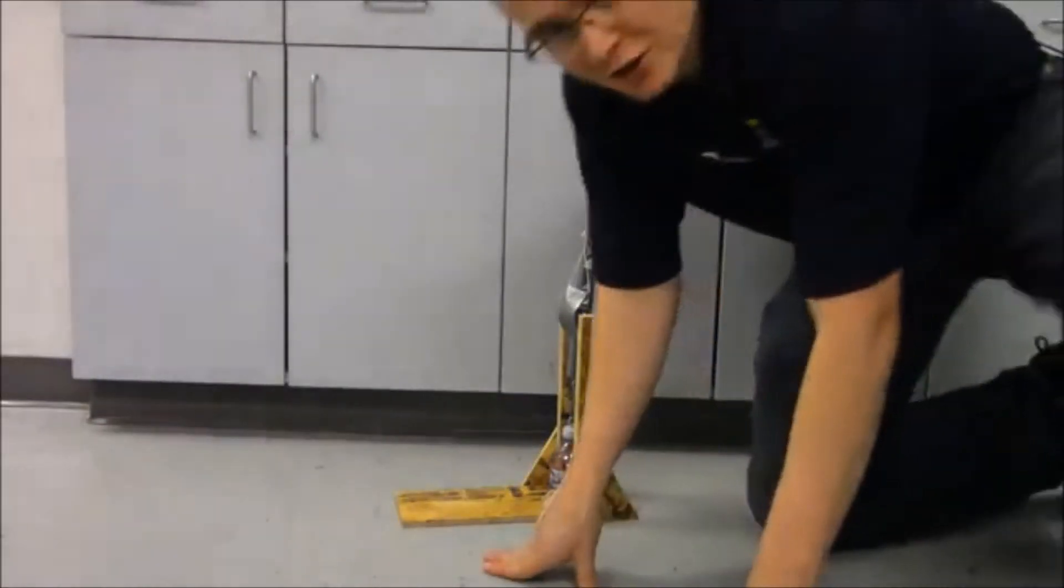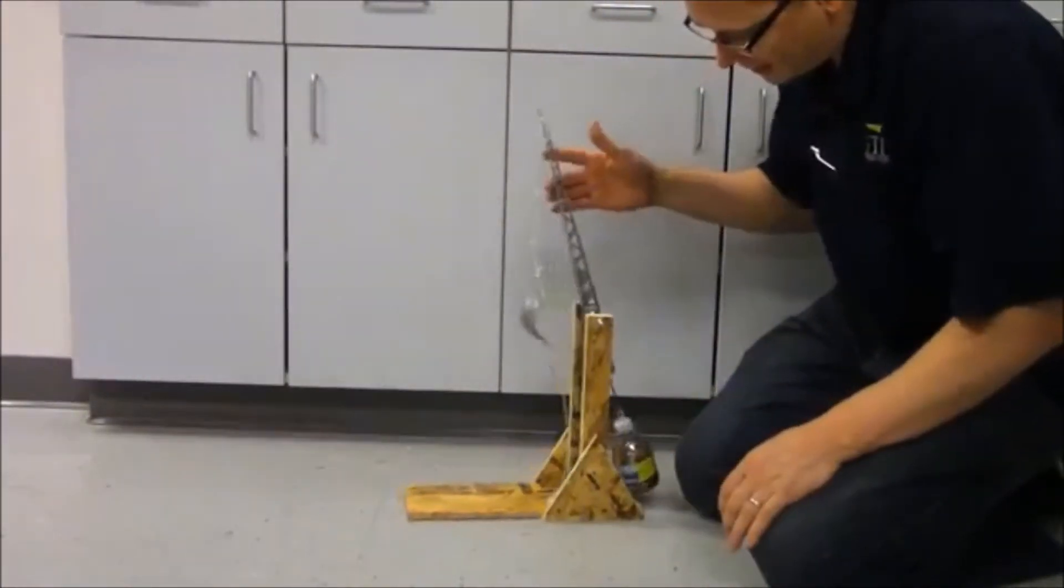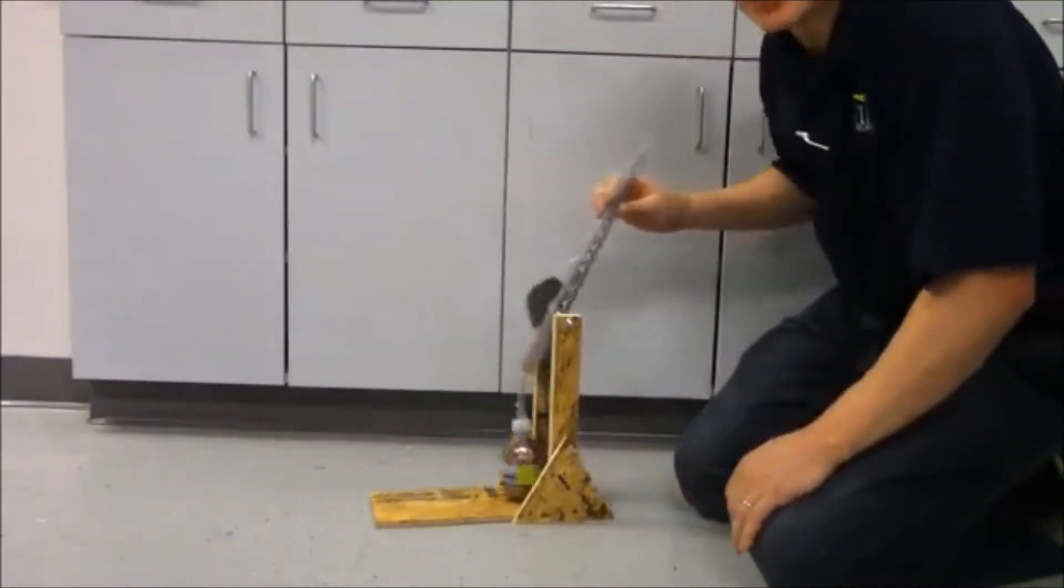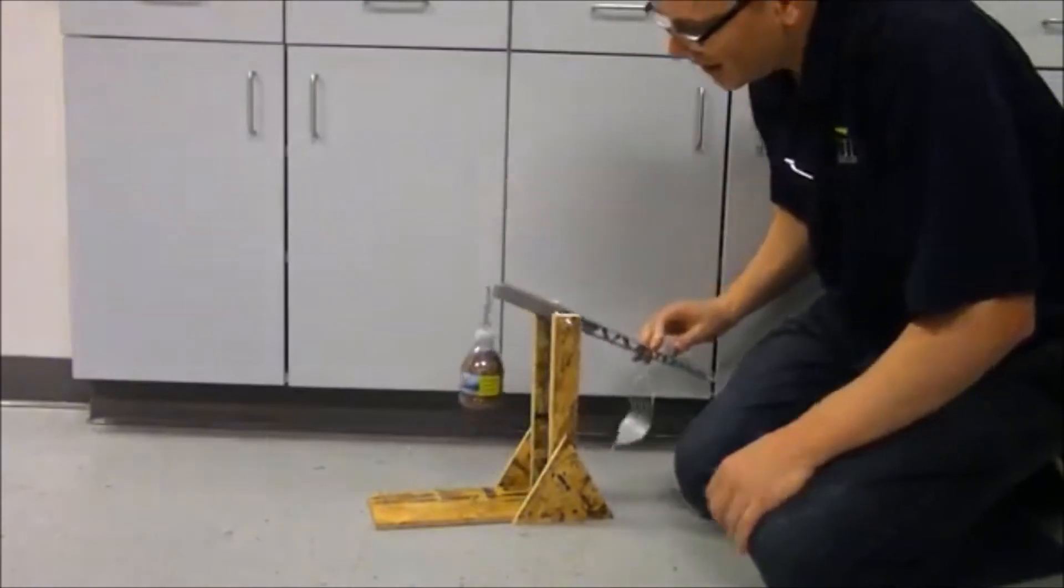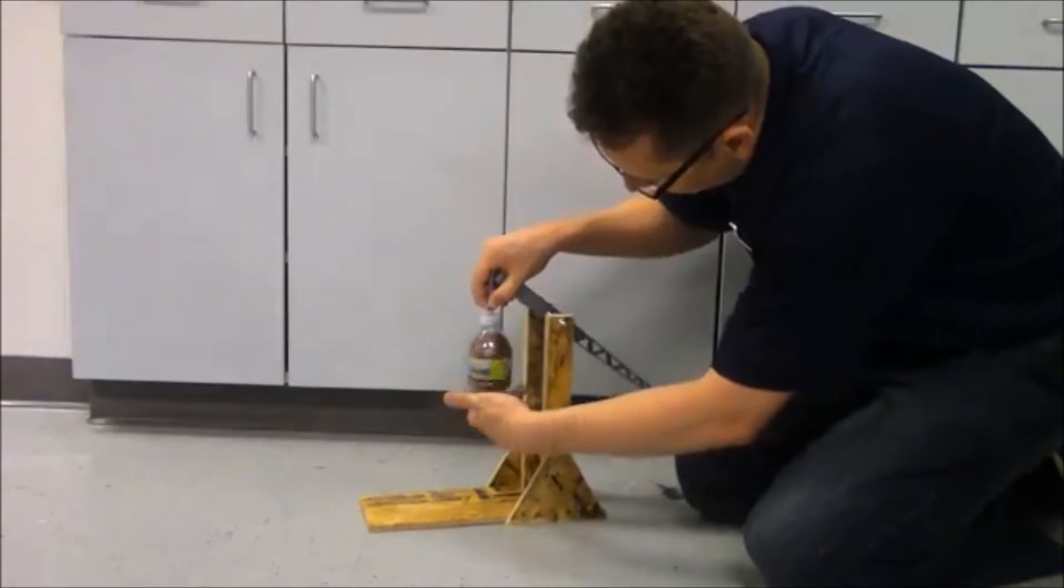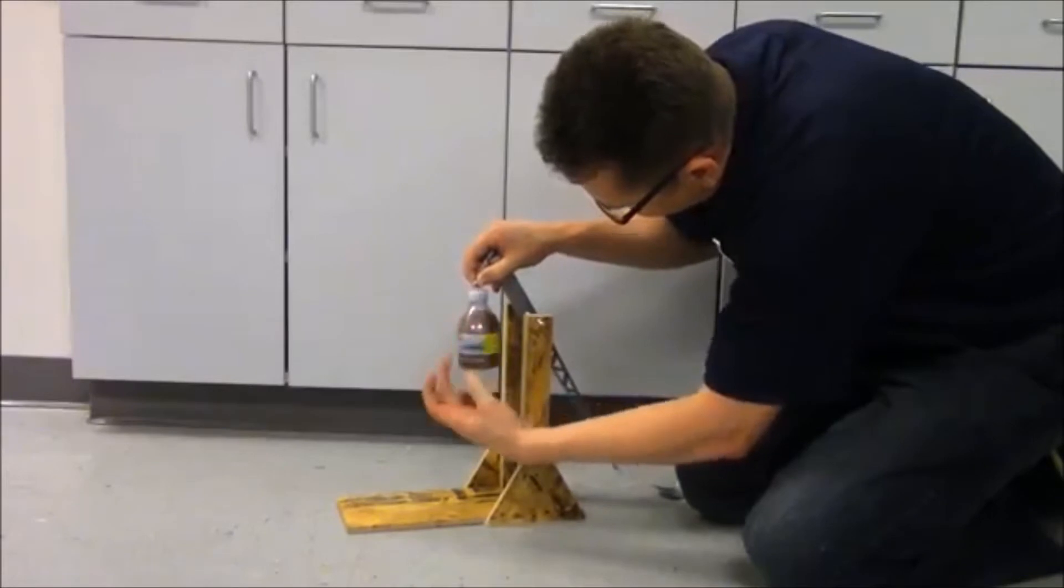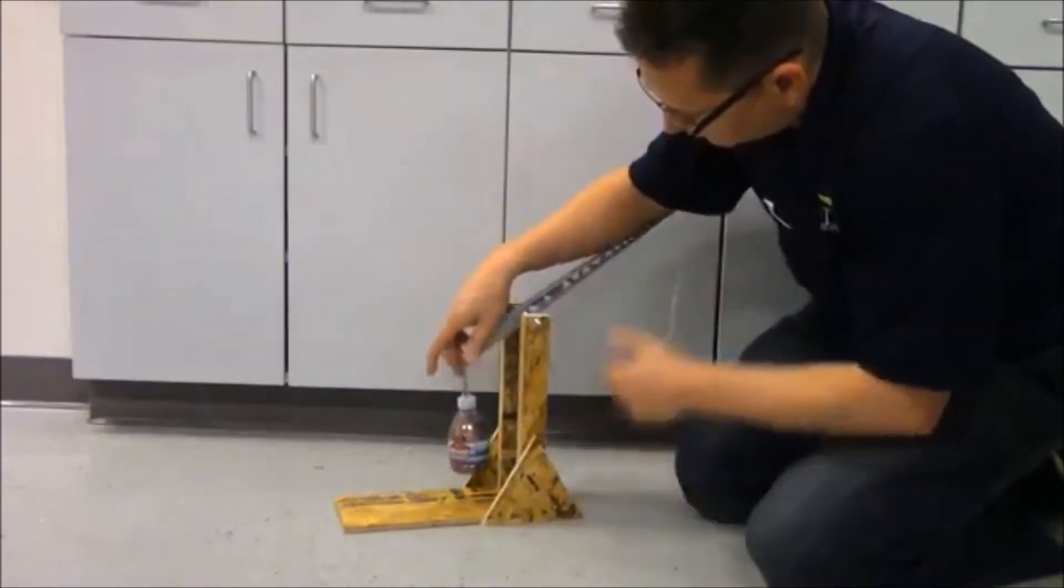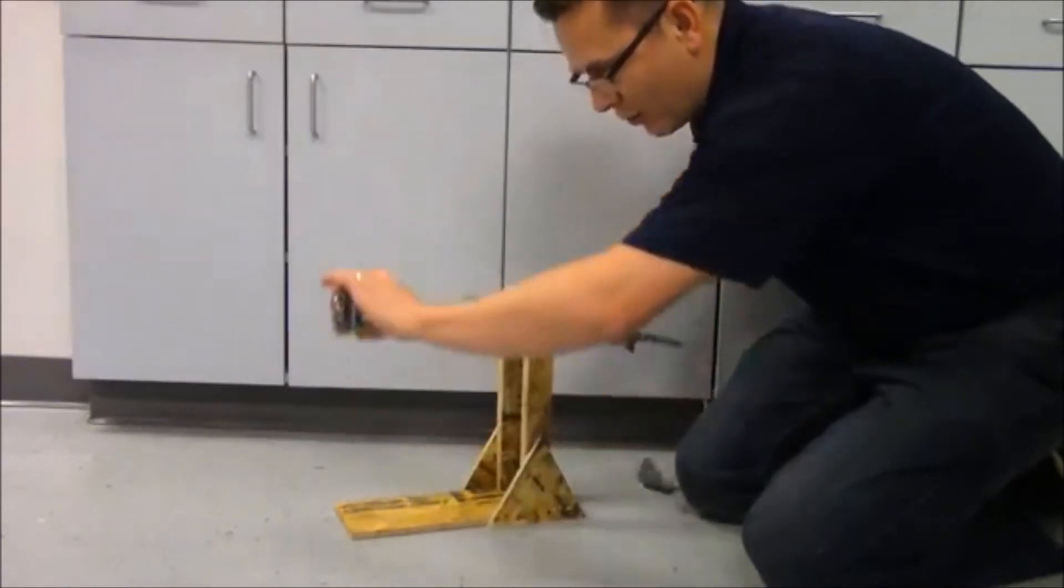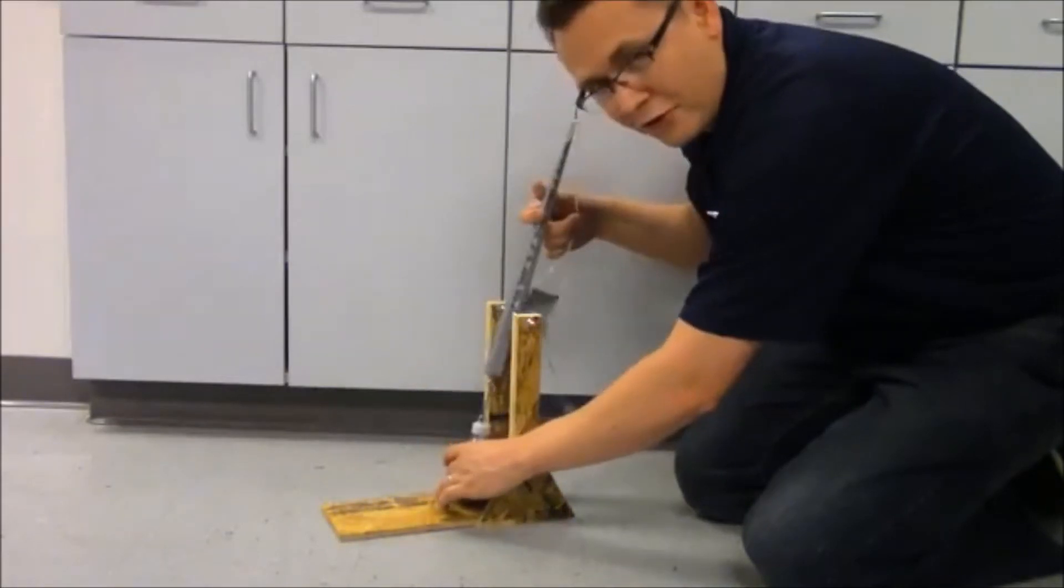All right. So, secrets for a good trebuchet. First of all, you want the weight to just barely touch, if at all. You know, don't let it touch. But you want to just barely not touch the ground as it's coming down. Having this being able to dangle like this makes it so that the weight can fall in a straight line. You don't want it to fall in an arc. It's much more effective to have a straight fall.